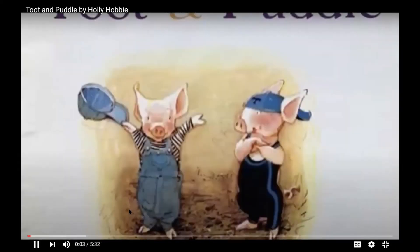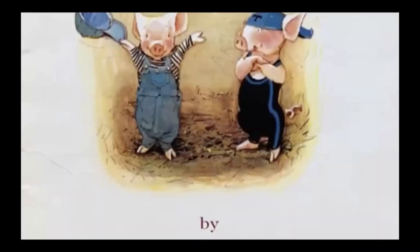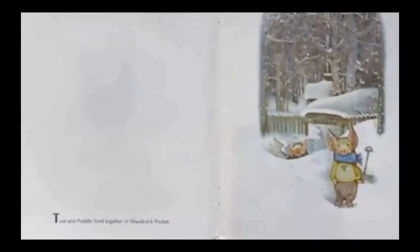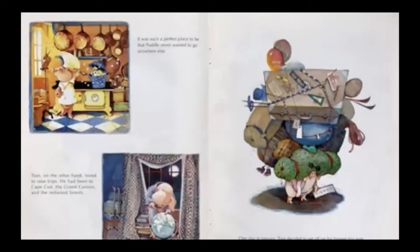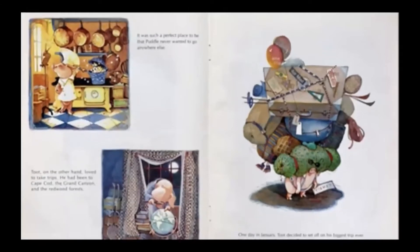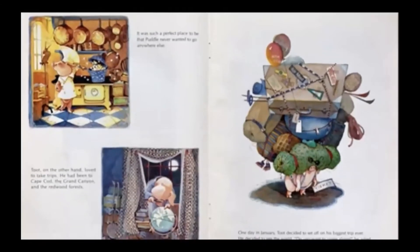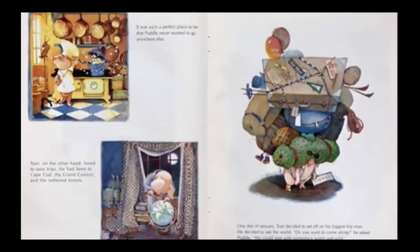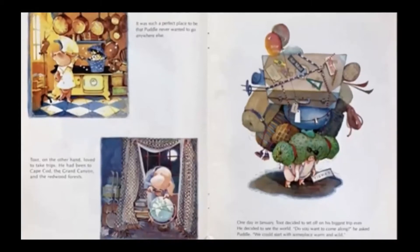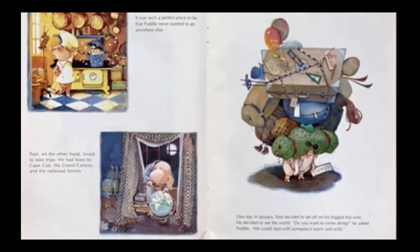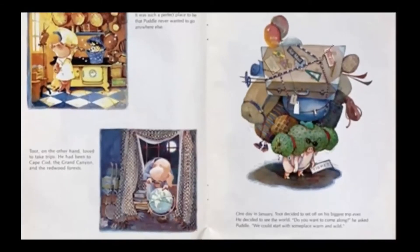Toot and Puddle by Holly Hobby. Toot and Puddle lived together in Woodcock pocket. It was such a perfect place to be that Puddle never wanted to go anywhere else. Toot on the other hand loved to take trips. He had been to Cape Cod, the Grand Canyon, and the Redwood Forest. One day in January Toot decided to set off on his biggest trip ever. He decided to see the world.